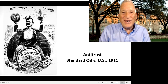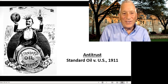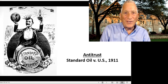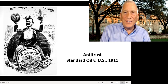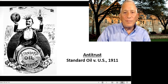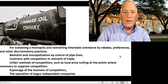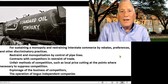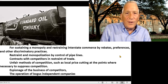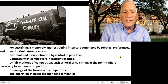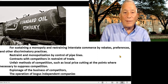We're going to talk about the Supreme Court case of Standard Oil versus the U.S., which is the first major test and decision based on the Sherman Antitrust Act of 1890. It was decided by the Supreme Court in 1911. It was brought by the Justice Department and it accused Standard Oil and John D. Rockefeller of sustaining a monopoly, restraining interstate commerce, and engaging in other discriminatory practices.